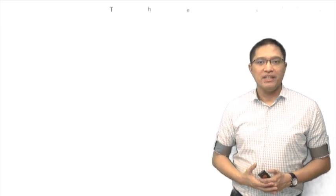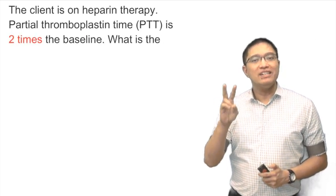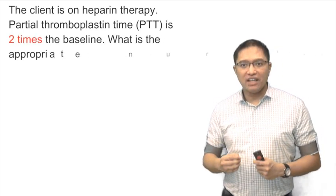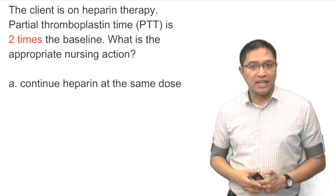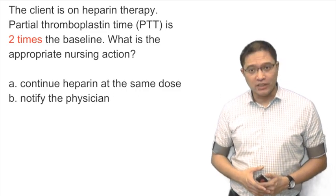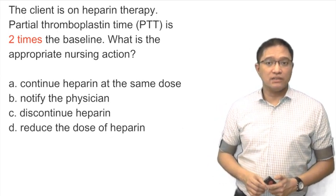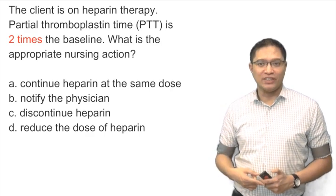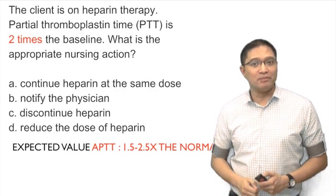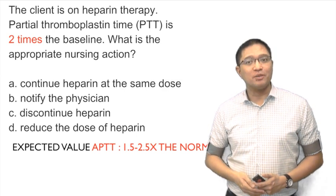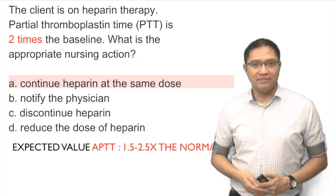Here's another example. If a client is undergoing heparin therapy and the partial thromboplastin time is 2 times the baseline, what is the appropriate nursing action? A) Continue heparin at the same dose, B) notify the physician, C) discontinue heparin, or D) reduce the dose of heparin. To answer this, remember that the expected value of APTT is 1.5 to 2.5 times the normal. Since this is 2 times the baseline, it is within the expected value. The best answer is A — continue heparin at the same dose.